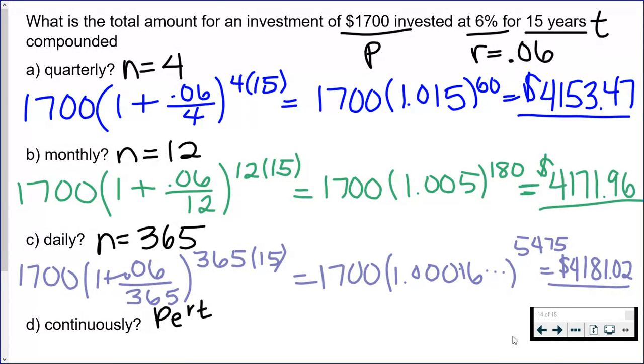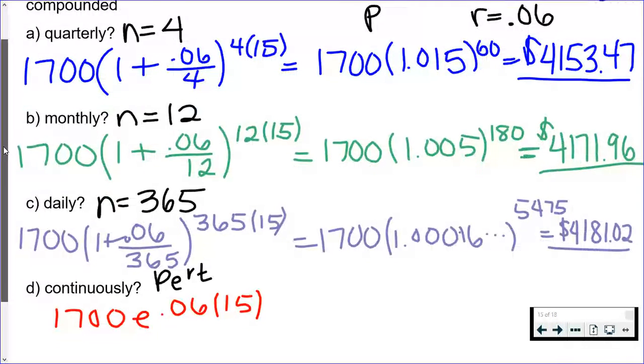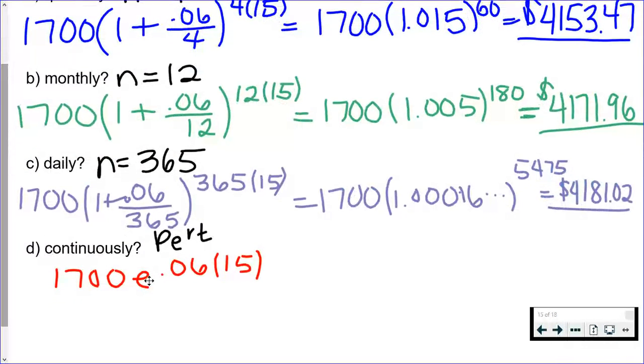So hopefully you got the first three. The last one we don't have an n—we have continuously—so we're going to use the PERT formula. We're still using P, r, and t from earlier, but this time you're going